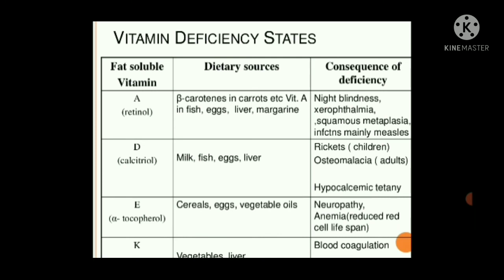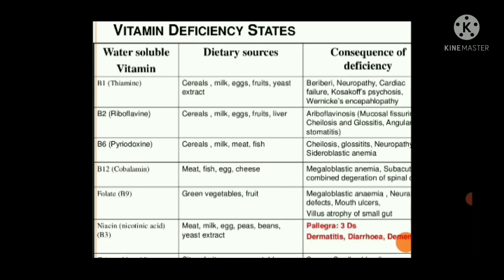Vitamin D rich foods are shown here. Next is vitamin C deficiency, caused by a dietary lack of fresh fruits and vegetables. Vitamin C is needed for collagen synthesis and collagen cross-linking and tensile strength. Charts for fat-soluble vitamins A, D, E, and K and water-soluble vitamins B1, B2, B6, B12, folate, and niacin are shown, covering dietary sources and consequences of deficiency.